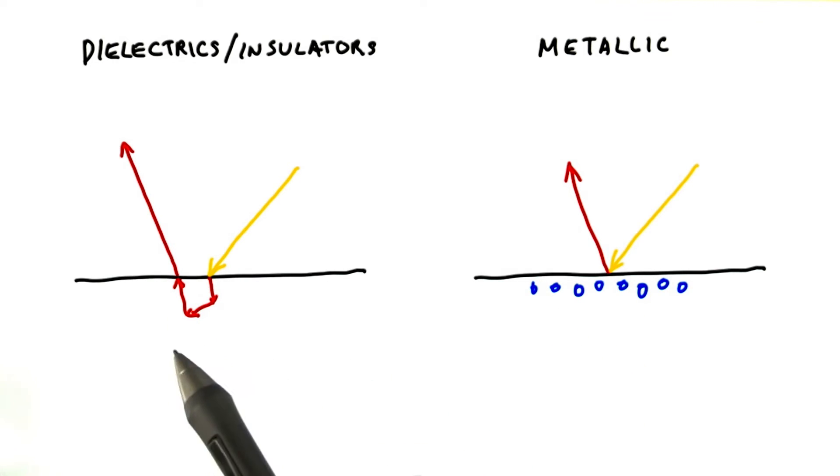Insulators have a diffuse term because the photons undergo subsurface scattering. Most of the time, the entry and exit points are so close together it doesn't matter, but the direction of exit certainly does.